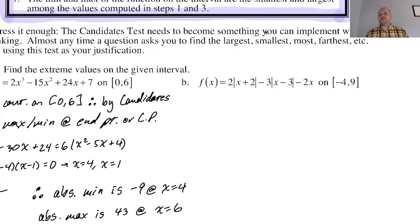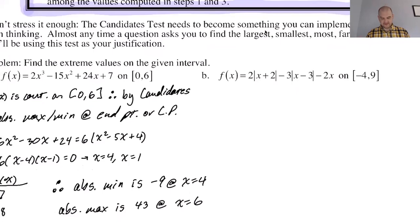All right, I'm back. We're still on page 313. We're going to do this last problem, and it says to find the extreme values on the given interval. This is a candidate's test problem. The candidate's test says if a function is continuous on a closed interval, then it has its absolute maximum or minimum at an endpoint or a critical point. That's what we're going to do.